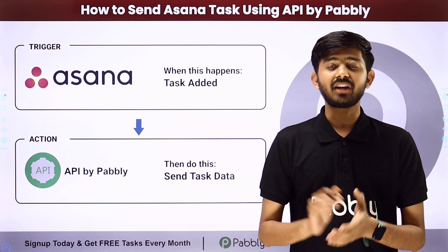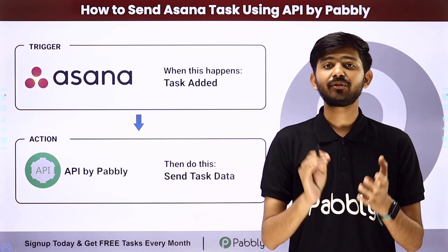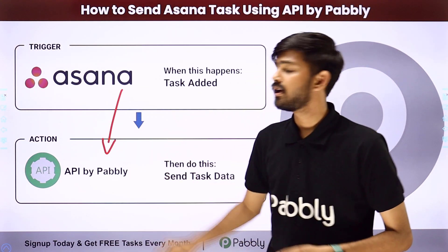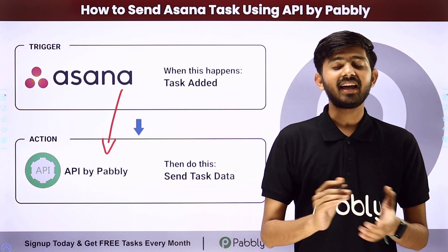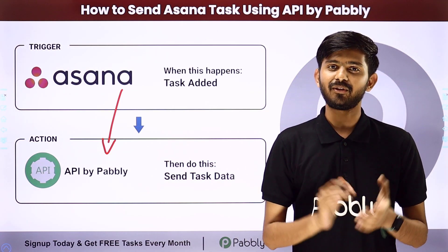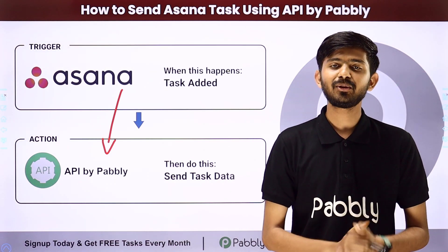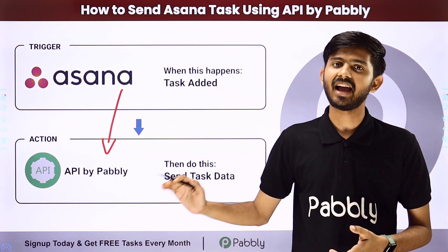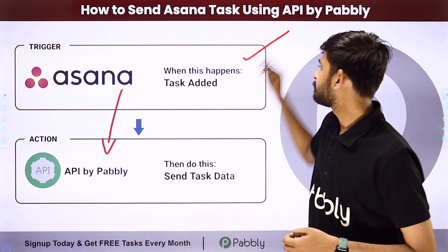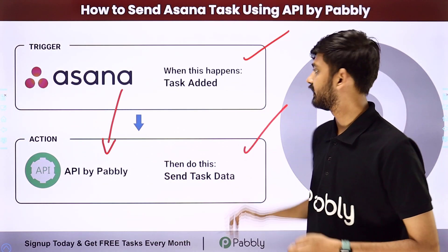For connecting the Discord channel, I'm going to use API by Pabbly, and for that I have to build a connection between Asana and API by Pabbly. For building this connection I'm going to use Pabbly Connect, which is an amazing software for automation and integration. In Pabbly Connect I'm going to use a trigger and action — the trigger application will be Asana and the action application will be API by Pabbly.